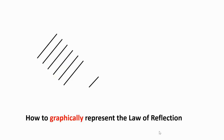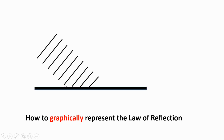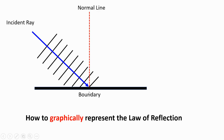How to graphically represent the law of reflection? We have a wave front coming and it's going to hit this reflective surface. This is the incident ray, which is perpendicular to the wave front. This is the normal line, which is perpendicular to the boundary. And this is the reflected ray, which has the same angle with the normal as the incident ray.